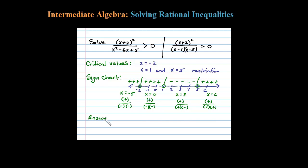last step is to answer the question. The question is: when is this rational expression greater than 0? In other words, when is it positive? Okay, so looking at my sign chart I can see the results are